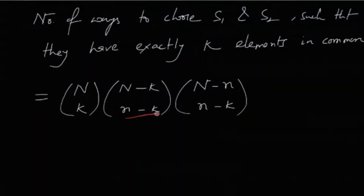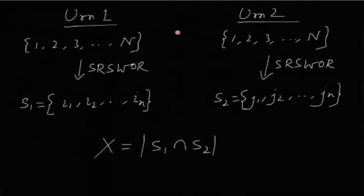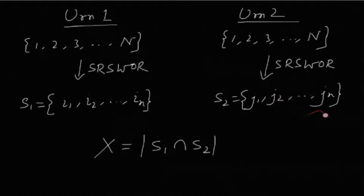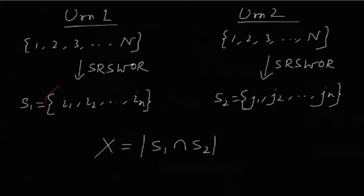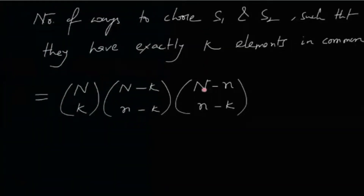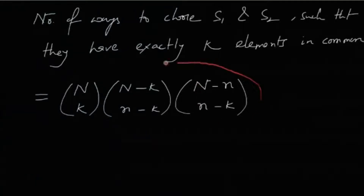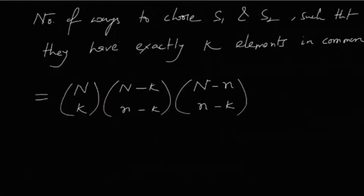After choosing S1, the remaining n−k elements of S2 must be distinct not just from the k common elements but from the entire sample S1. So the remaining n−k elements of S2 must be chosen from N−n elements — those not in S1 at all — giving N−n choose n−k ways. This product gives the total number of (S1, S2) pairs with exactly k elements in common.